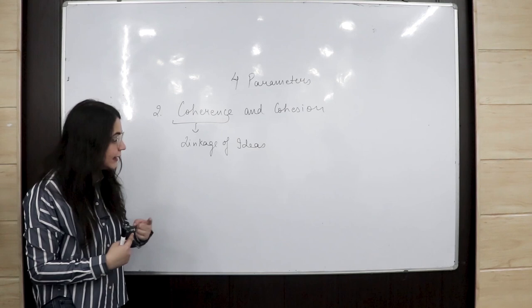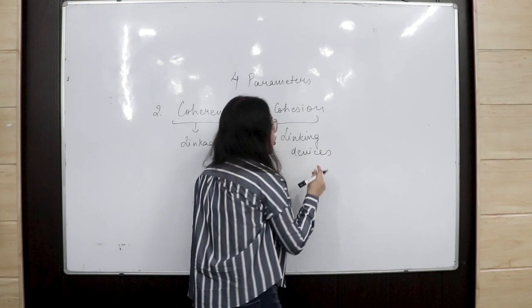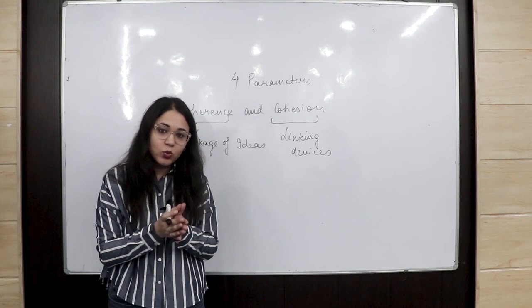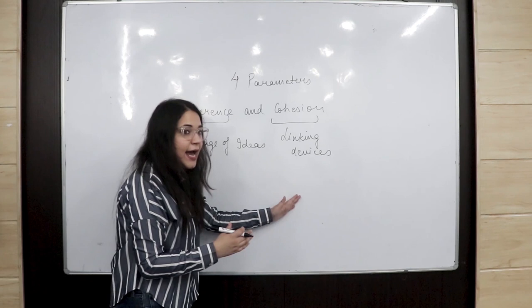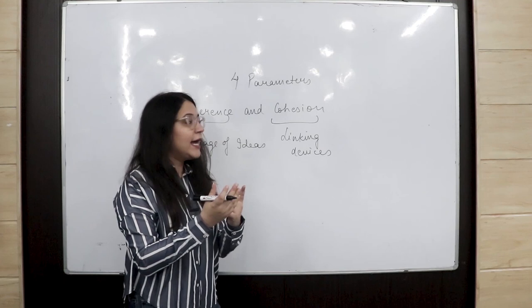Cohesion refers to your linking devices — the devices that connect two ideas together, such as 'while' and 'whereas.' Coherence and cohesion have different meanings: coherence means your ideas should be appropriately linked, whereas cohesion refers to the linking devices used to connect those ideas. This parameter also carries 25% weightage in your overall score.